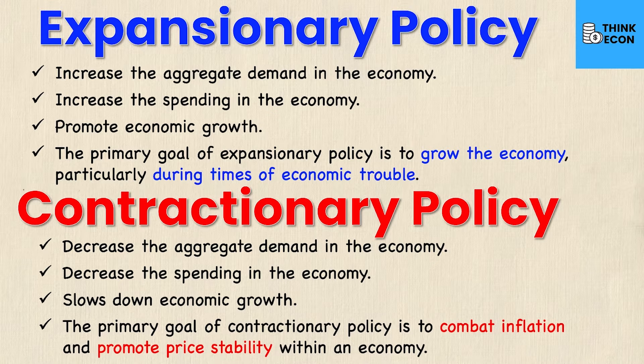To briefly summarize: expansionary policy is aimed at increasing spending and demand in an economy to promote economic growth. Contractionary policy is the opposite — we want to decrease aggregate demand and slow the economy. This is not to be confused with stopping the economy in its tracks; we just want to cool it down a little to control prices and inflation before going back into that upward trend on the business cycle.